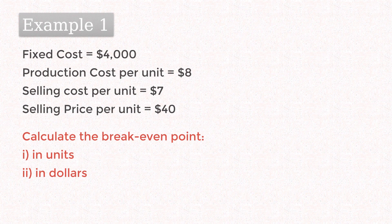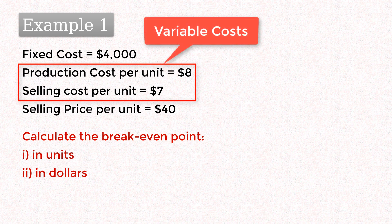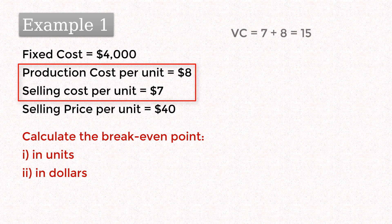Now let's look at some examples. Here, we want to determine the breakeven point in units and in dollars. Note that there are two variable costs here, production cost and selling cost. We first combine them so we have a total variable cost function of 15x.